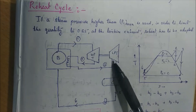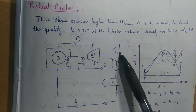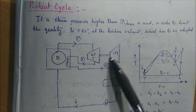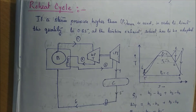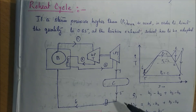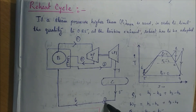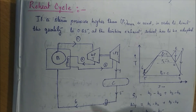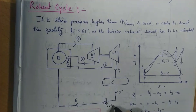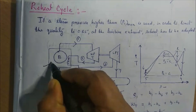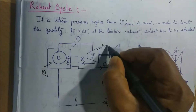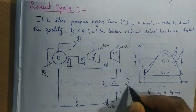The reheated steam is then fed to the low pressure turbine, where it produces additional work output for the system. After performing work, the steam is exhausted from the low pressure turbine and fed to the condenser, where heat is rejected at constant pressure and the steam becomes saturated liquid water. That saturated liquid water is then fed back to the boiler by means of the pump, which requires work input WP.